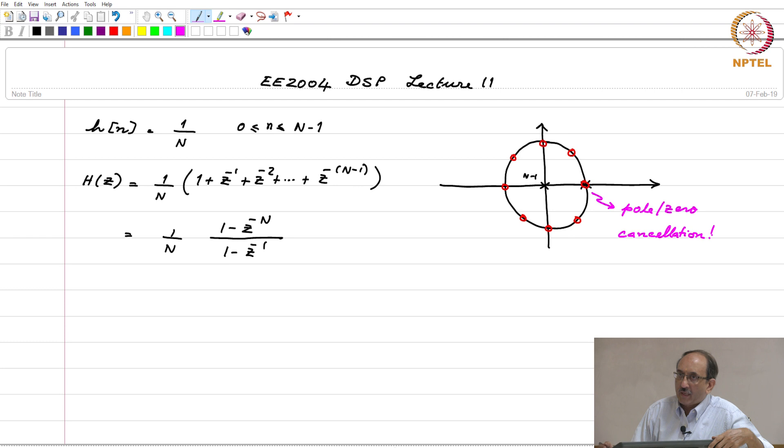Therefore, if you had an uncancelled non-trivial pole, it will give rise to an exponential that is of infinite duration or semi-infinite duration—either it will be right-sided or left-sided. So, moment you have such a component in the impulse response, such a system cannot be FIR.